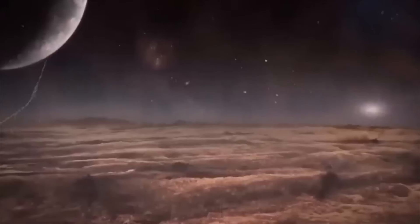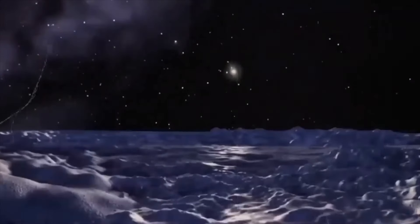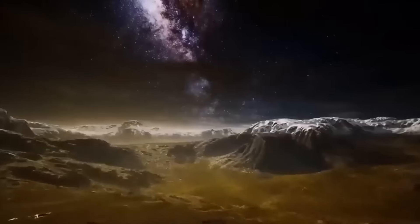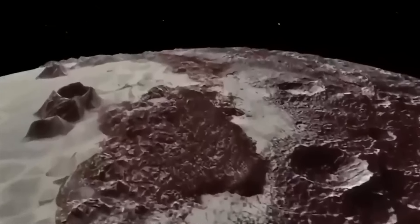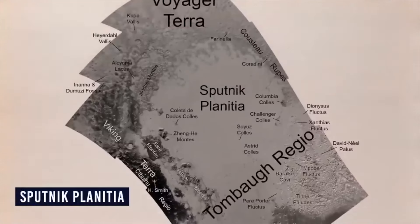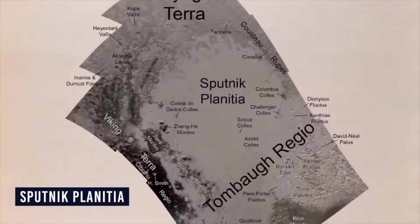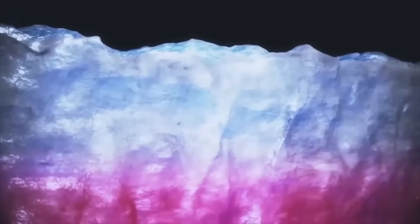A heart-shaped feature, boldly etched north of the equator, corroborated Pluto's dynamic character. An expansive frozen basin named Sputnik Planitia, adorned with colossal glaciers, garnered attention for its profound influence on Pluto's dynamics.